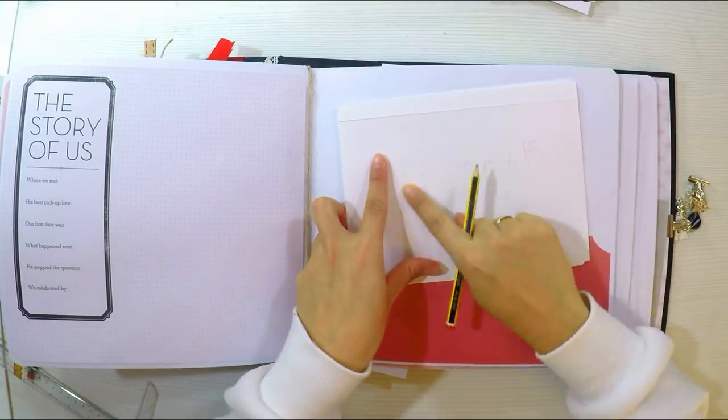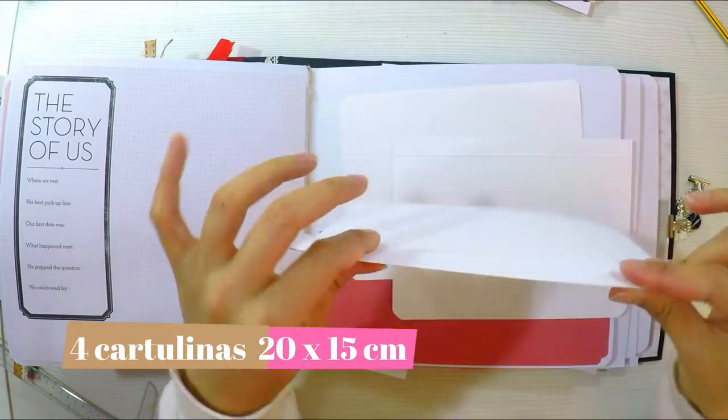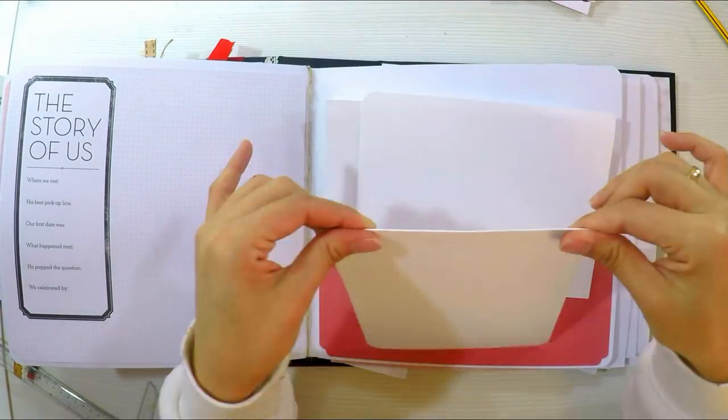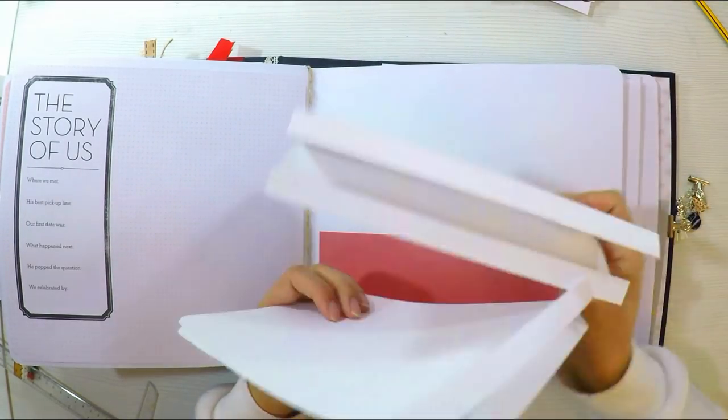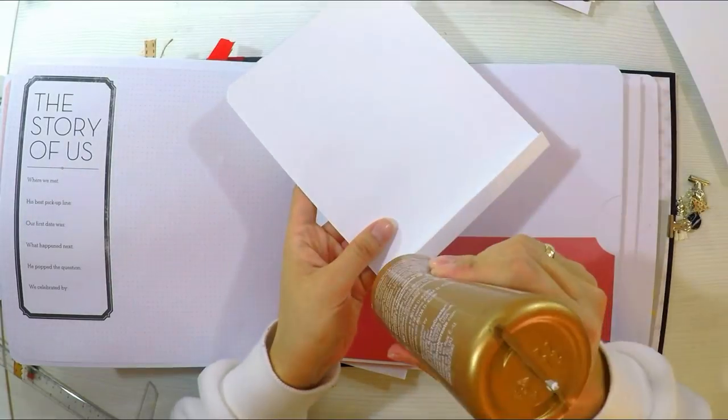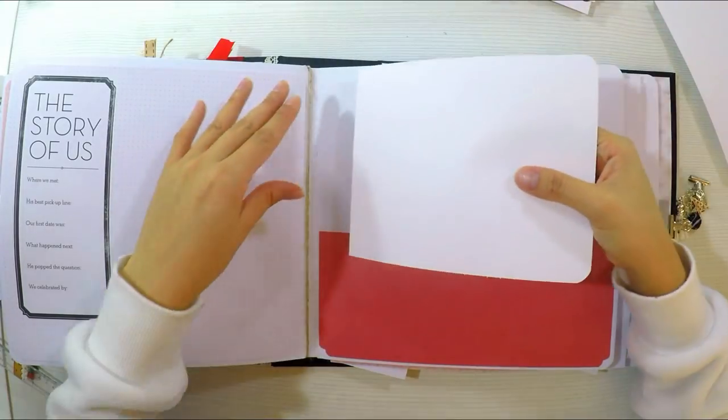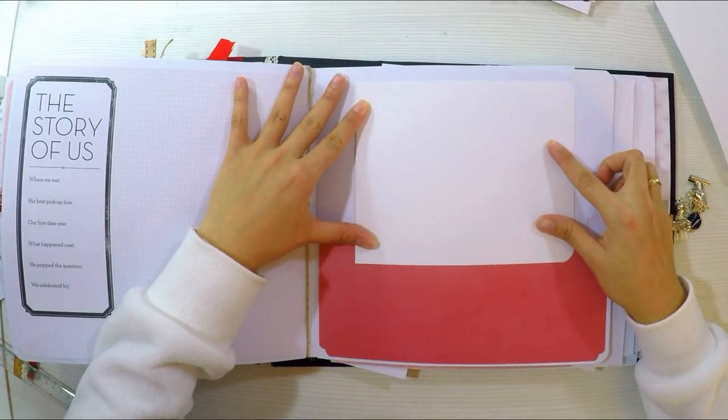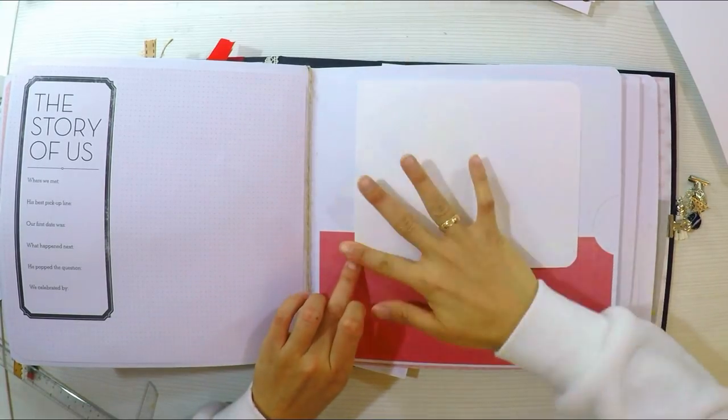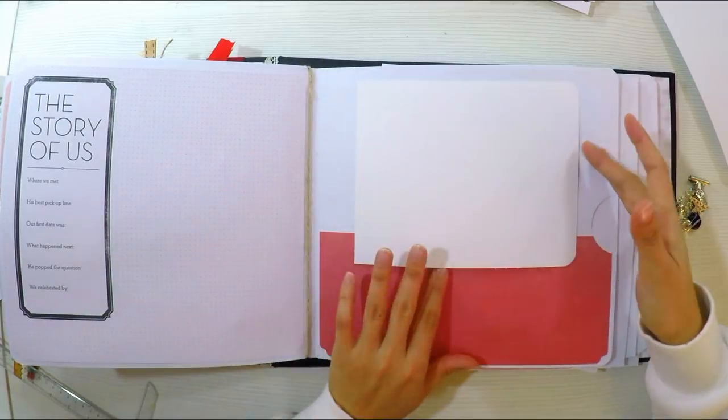Necesitamos cuatro cartulinas de 20 por 15. Como les dije antes, todas nuestras estructuras van a medir 20, 15, 12, 20 para que no se les haga difícil el medir. Dos de ellas vamos a hacer una pequeña solapa de un centímetro a lo horizontal y en dos de ellas a lo vertical. Vamos a pegar nuestras primeras dos, una a la derecha y otra a la izquierda. Intentando medir bien, yo aquí me pasé un poquito así que la despego y la vuelvo a colocar en el sitio adecuado.